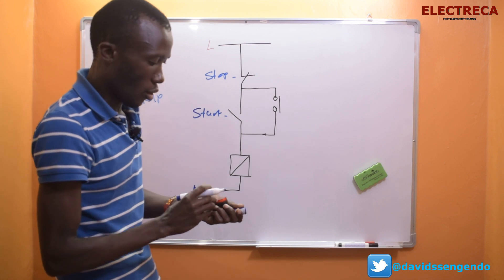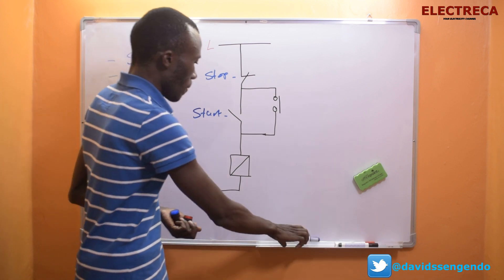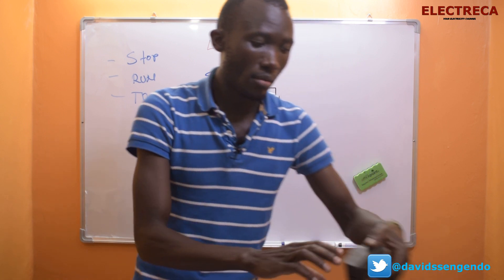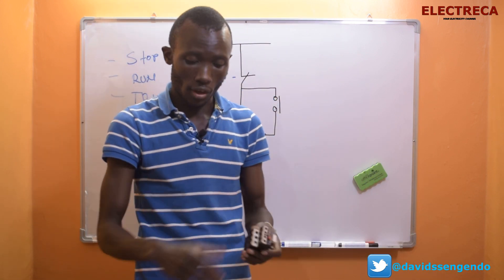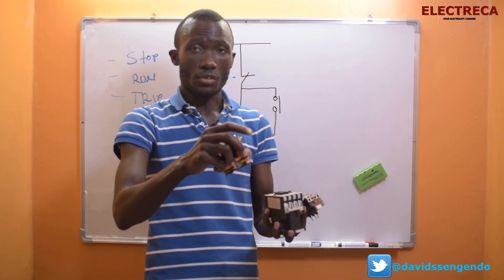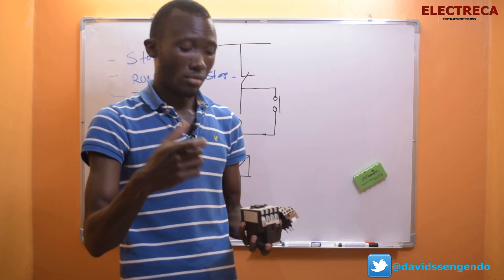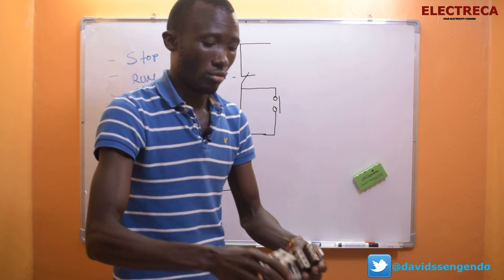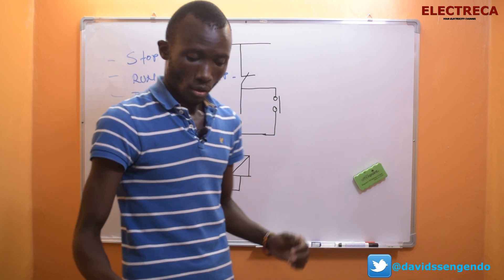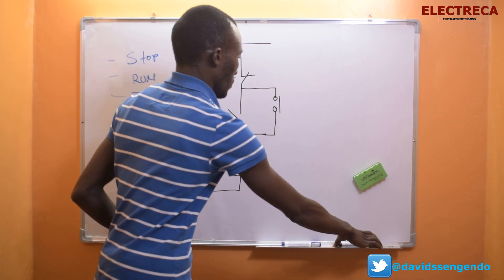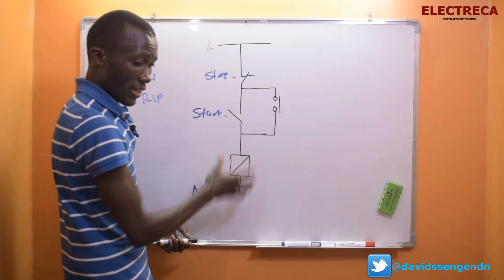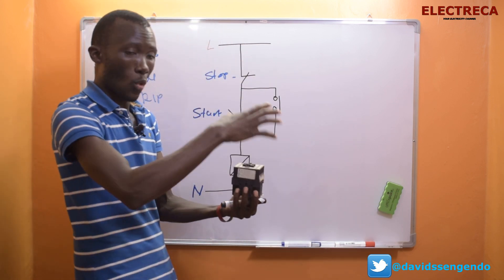In this circuit you'll require something like an overload relay, and then you have a contactor, you have these buttons here, as the video that I've showed you indicates. Now you have your circuit here, your contactor that you've wired with everything like the video indicates.